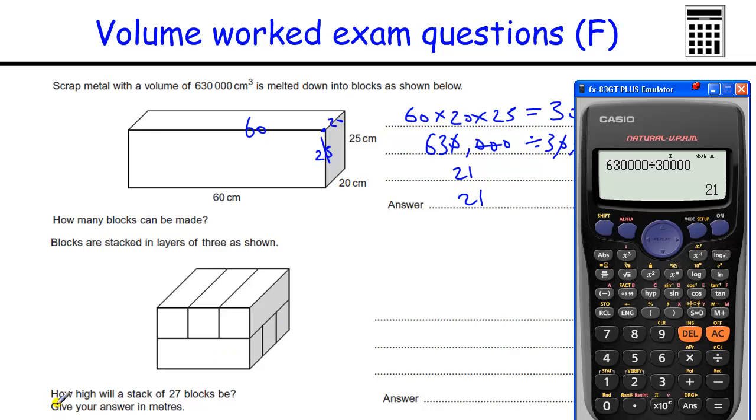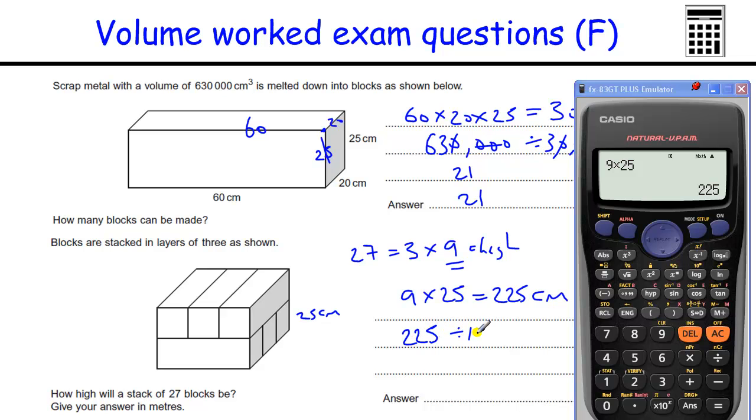Okay. Blocks are stacked in layers of 3 as shown. How high was the stack of 27 blocks? Answer in meters. Okay. So 27 blocks. Now I know lots of people did this question originally. They think it's 27 blocks high. It's only going to be 9 blocks high because each row has got 3 blocks in it. So 27 equals 3 lots of 9. So that's how high it is. And we know each block is 25. So we've got 9 times 25. That's 225 centimeters. And we want it in meters. So we've got to divide that by the 100 centimeters that are in a meter. And that will give you 2.25 meters.